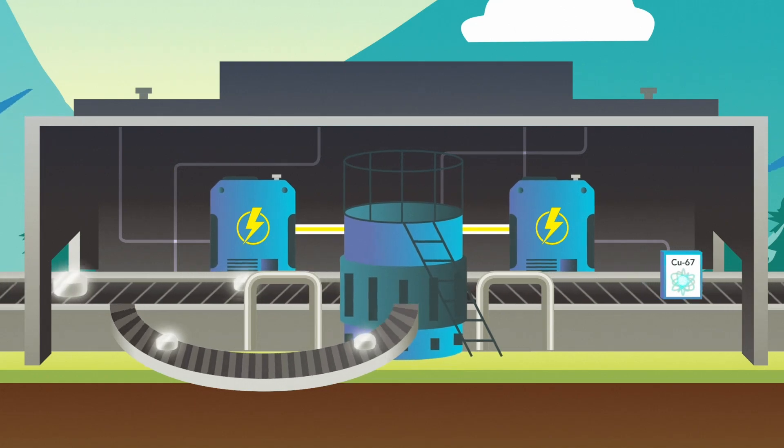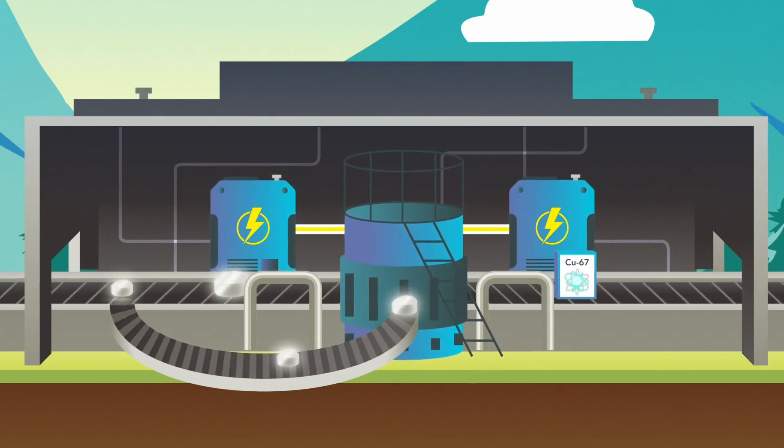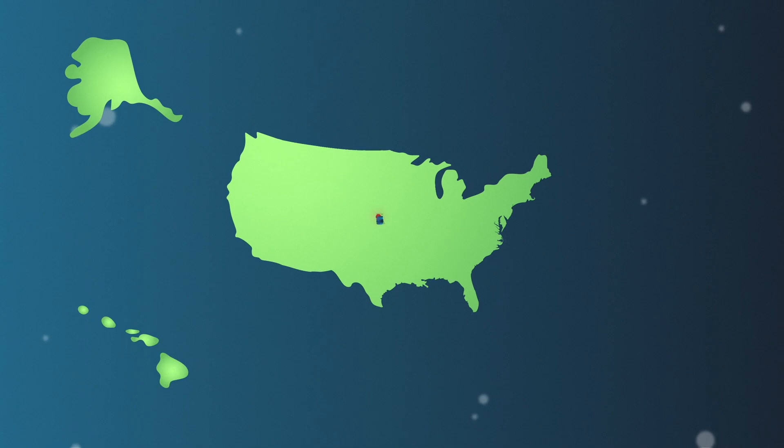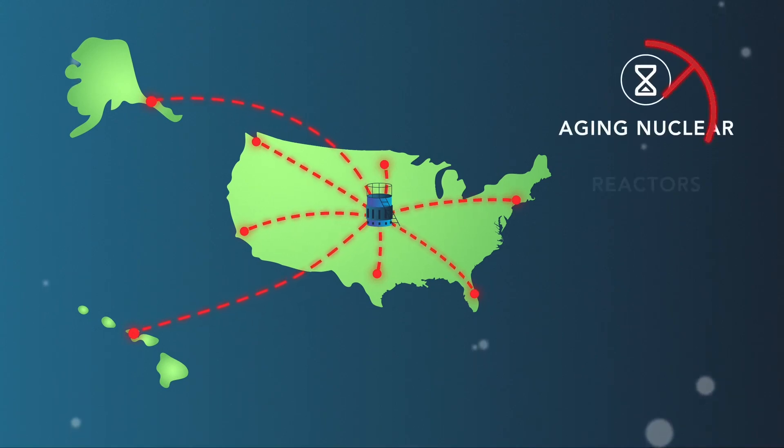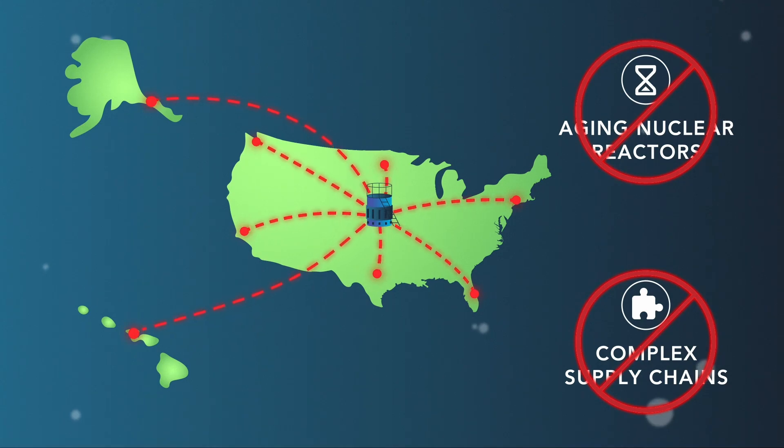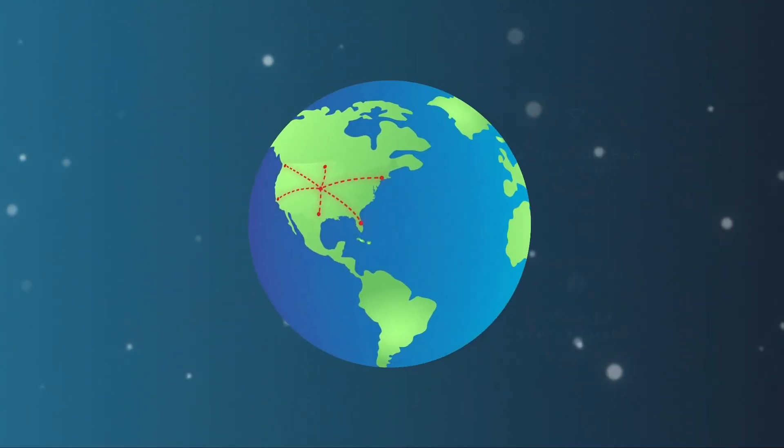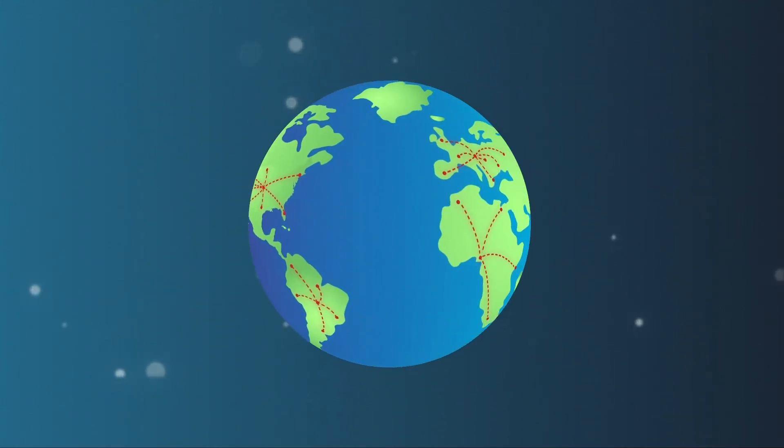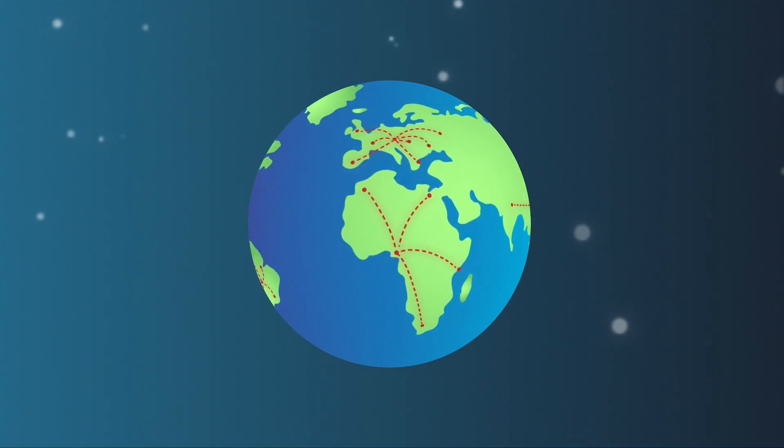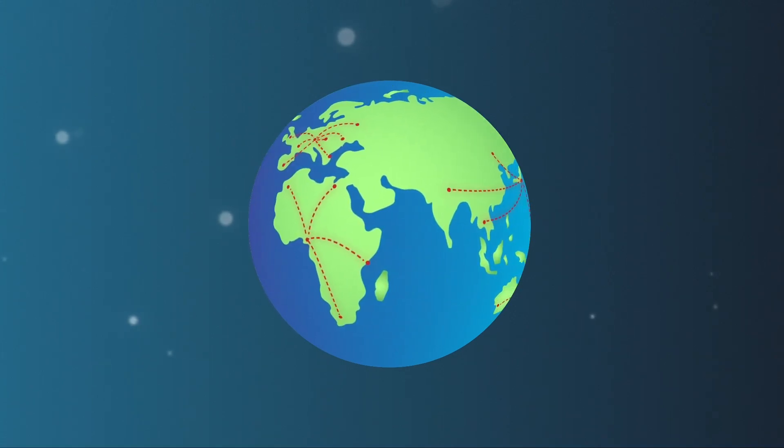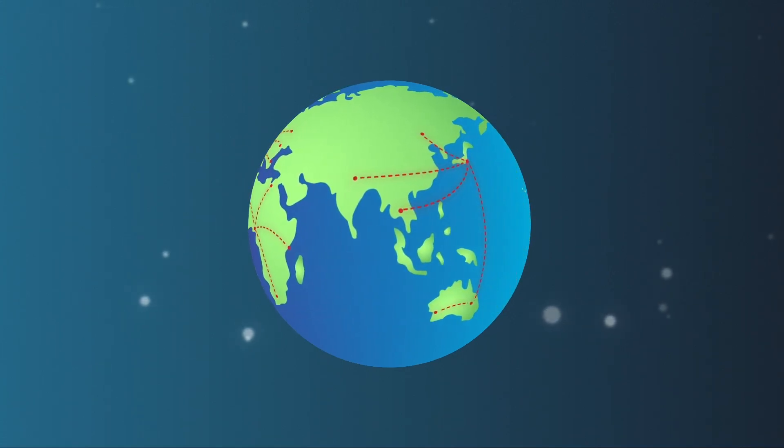The use of electron accelerators to produce Copper-67 enables the domestic production of Copper-67 entirely in the United States, eliminating the reliance on aging nuclear reactors and complex international supply chains. This process is currently being used in the United States for Clarity's ongoing clinical programs and is easily scalable to other geographies around the world.